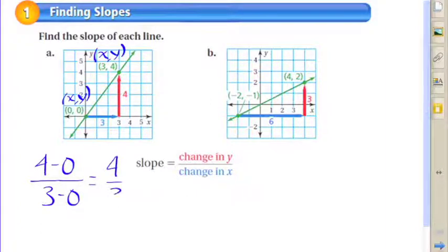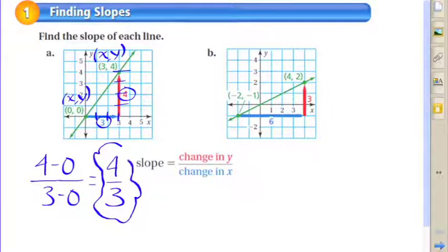And then take the x value 3 and subtract 0, you get 4/3. Now I could have gone the other way. I'm sure you're probably thinking, well, how do I choose which one comes first, which one I subtract from which? Well, I could have done 0 minus 4 and 0 minus 3 as well, and I would have got negative 4 over negative 3.